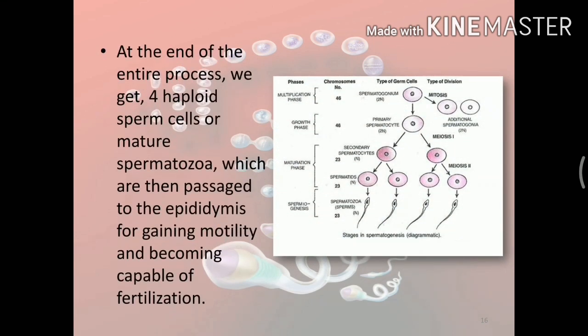At the end of the entire process, we get four haploid sperm cells or mature spermatozoa, which are then passed to the epididymis for gaining motility and becoming capable of fertilization.